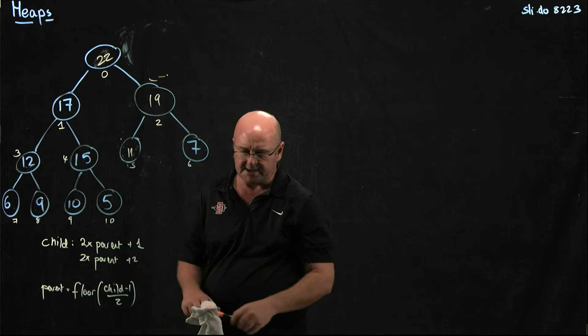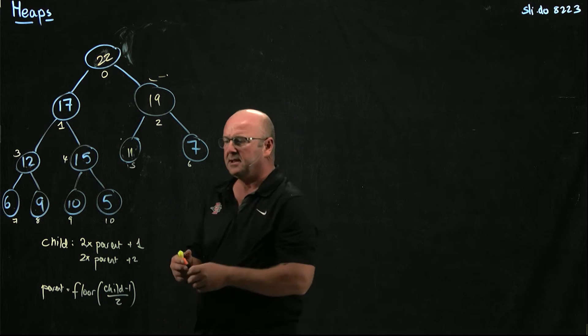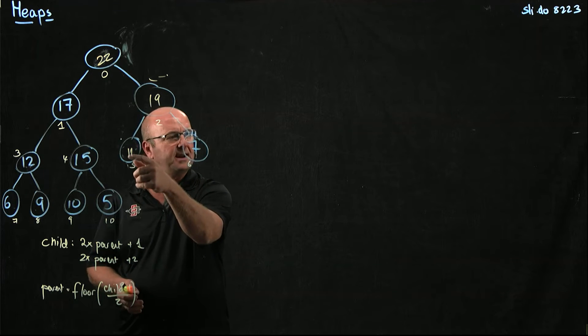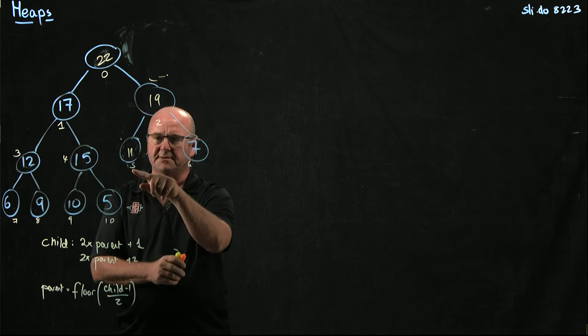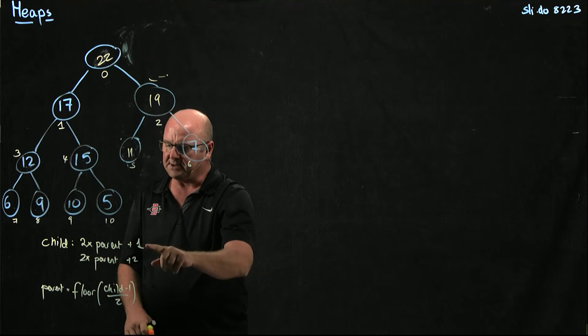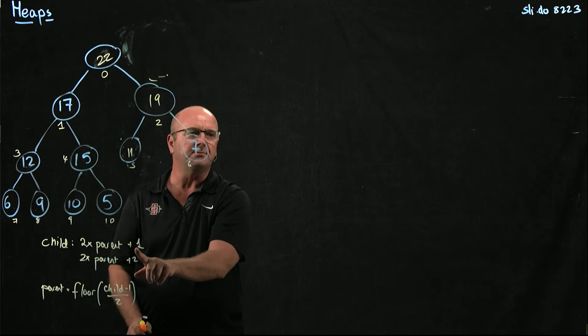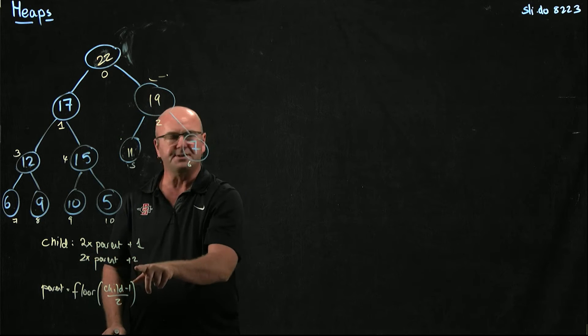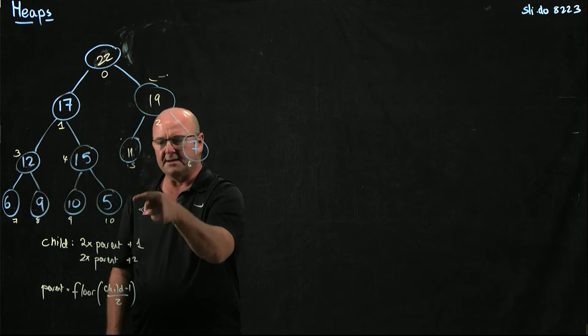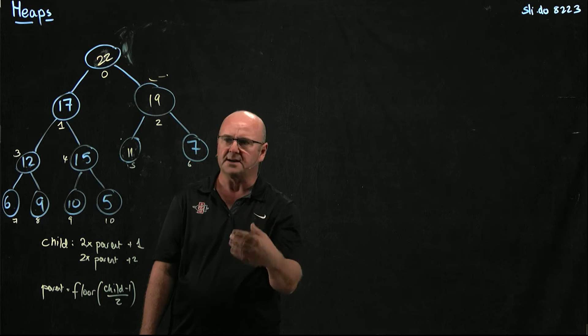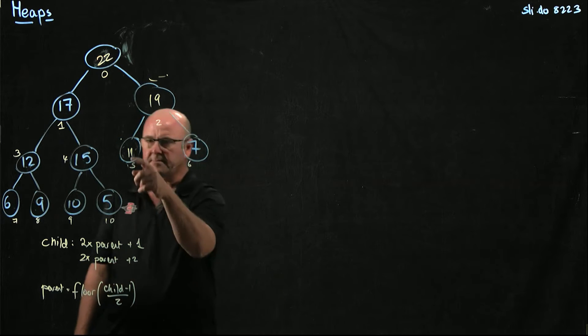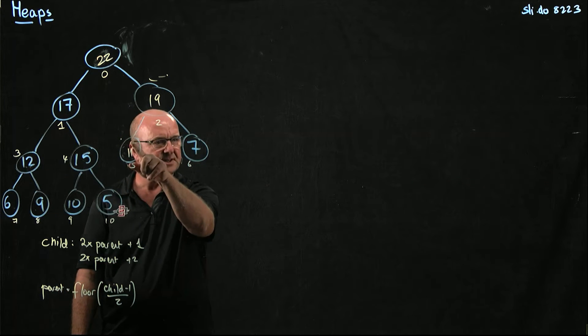And our stopping conditions, when we trickle down, are either that we get to an element where, if we go to look at its children, so we're at 5. If we go to the children, 2 times parent plus 1 would be 11, 2 times parent plus 2 would be 12. 11 and 12 are larger than any element in our array, right? So they're larger than last position. So that's one of our stopping positions.